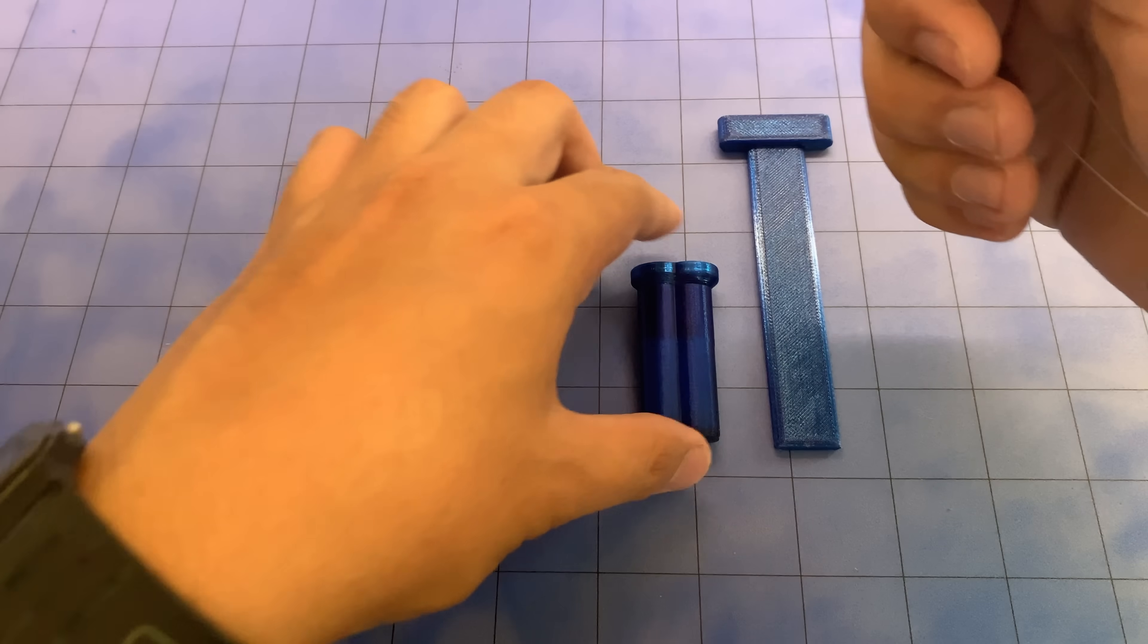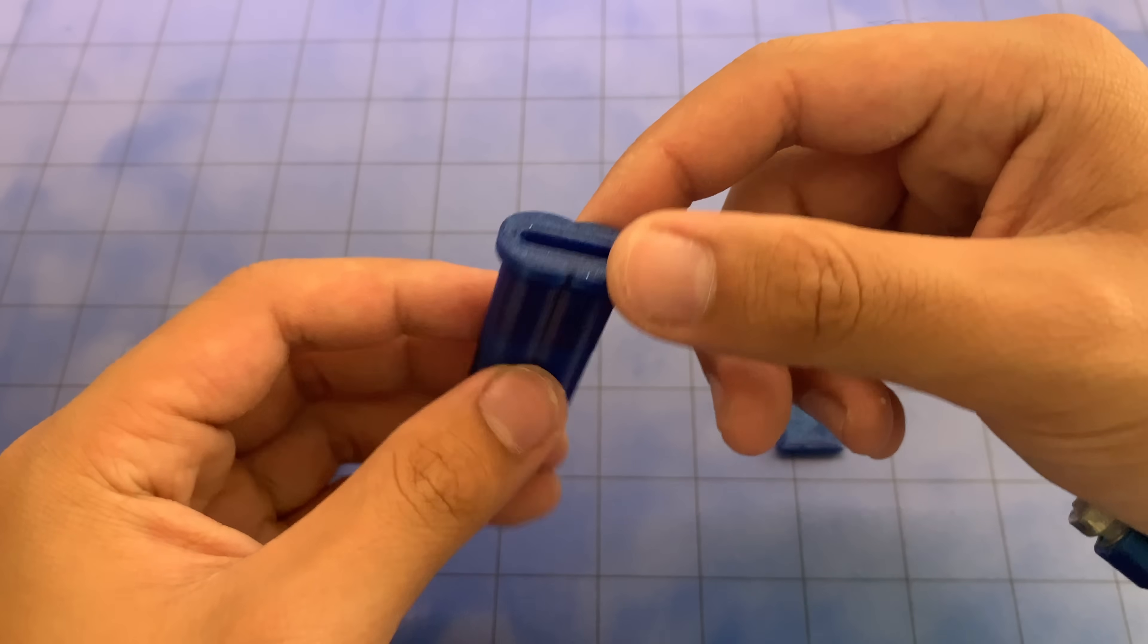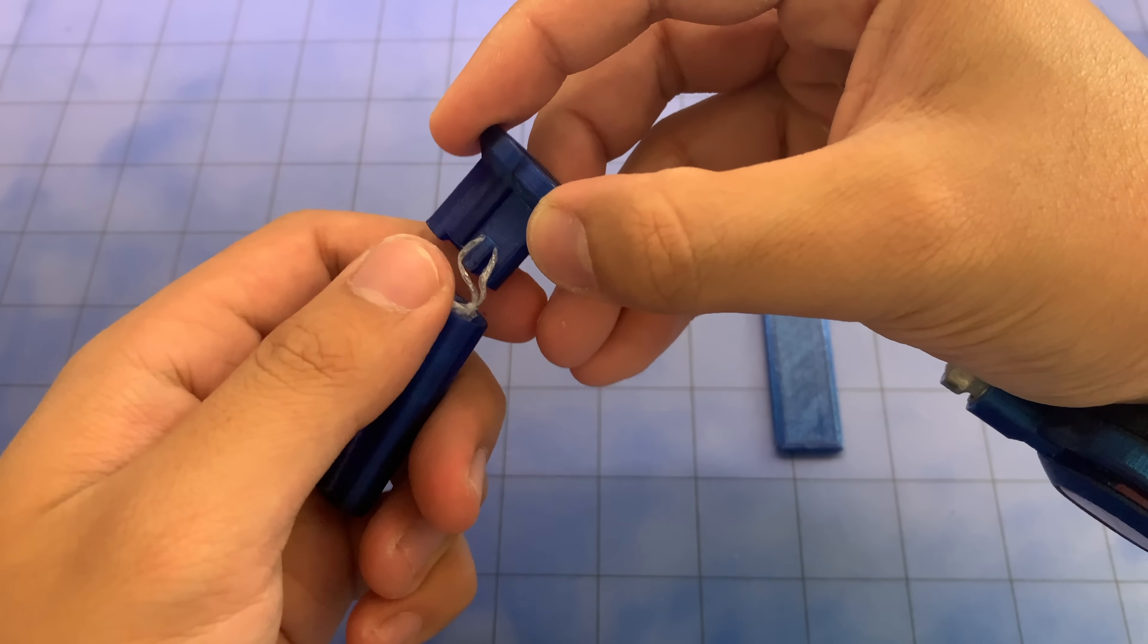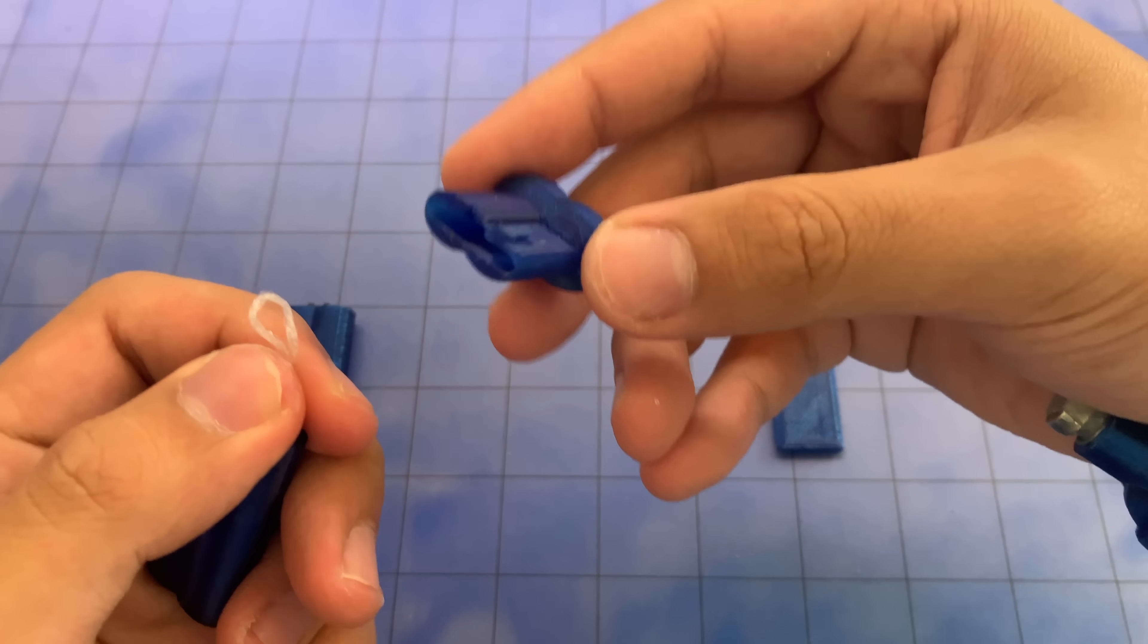Cool. So this is the cartridge that holds all the webbing. To use it you take it out and you'll notice there's a loop wrapped around this cover here.